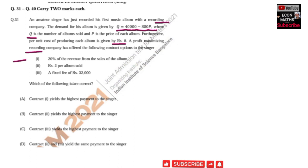A profit-maximizing recording company has offered the following contract options to the singer: the first option is 20% of his revenue from the sale of the album; the second option is rupees 2 per unit album sold; and the third option is a fixed fee of rupees 32,000. We need to determine which contract gives him the highest payment.